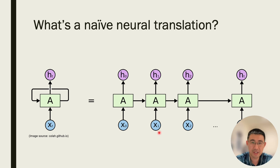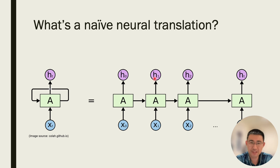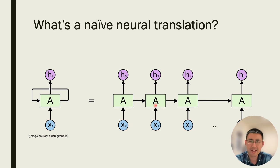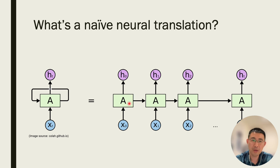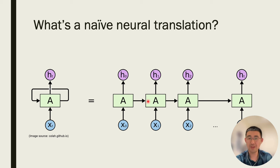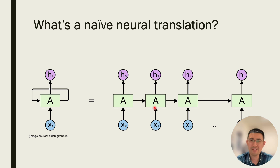We give it a word, spit out a new word. Give it a second word, spit out a new second word. We need to pass the information from the first word to the second, because in English I would say I am, you are, he is, they are. What I'm going to say now depends on what I just said. So we are passing the information from what we did last time to this new neural network together with the new information we need to translate. This is pretty natural, and this is the bare bone of a neural translator.